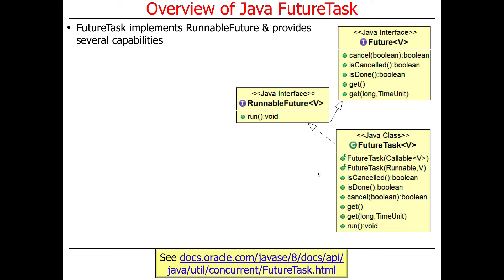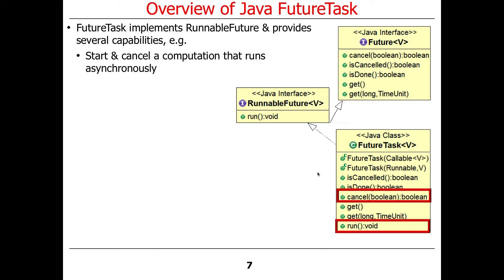Each of these interfaces adds a bit more to the puzzle. We get the methods to do future operations from Future; RunnableFuture inherits those and adds a run method; and then FutureTask implements that, filling in run and get and so on, and adds a few other things. You can start and cancel a computation that runs asynchronously, and you would typically do this using the executor service and its thread pool.